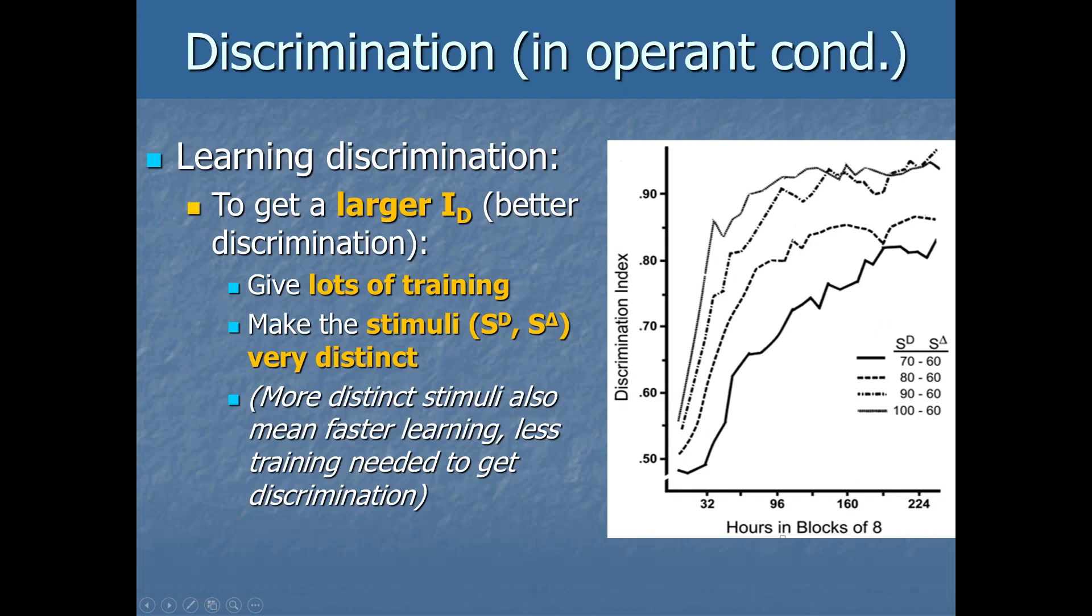So we're going to look at the solid, thick black line. There they did discrimination training where the SD, the rewarded stimulus, was a 70 hertz tone, but the S delta, where they weren't rewarded, was if a 60 hertz tone came on. So they do a bunch of these trials. You can see for hours and hours and hours they're doing these trials. But for a while, right, even after 200 hours, so when we get about here, 200 hours is gone. You can see they are figuring it out. There's a discrimination index of about 0.8. They can tell these two sounds apart. They know when to respond on one and not the other. But the discrimination index barely gets over 0.8. It doesn't get up to anywhere near perfect, right?